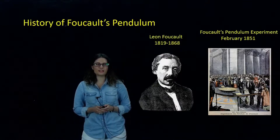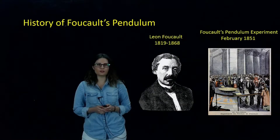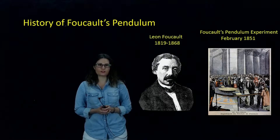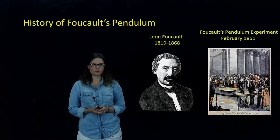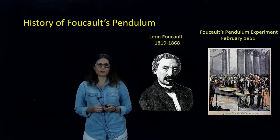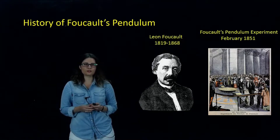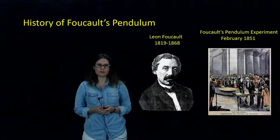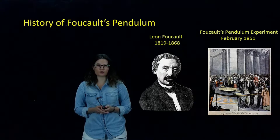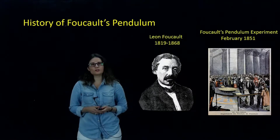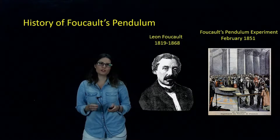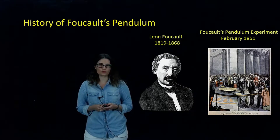Foucault's pendulum is named after a French physicist, Leon Foucault, who lived in the 19th century. He conducted an experiment that showed the rotation of Earth. It was a really simple experiment — he just took a 28 kilogram bob and suspended it with a 67 meter wire from the dome of the Pantheon in Paris. As a result, he showed that the plane under the pendulum rotates, which was the proof of Earth's rotation.